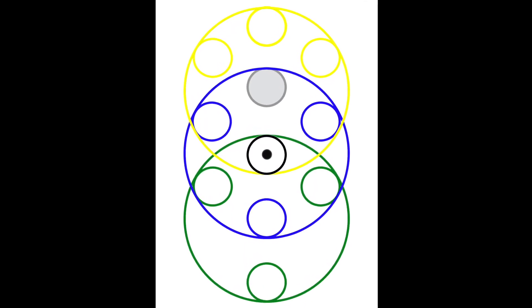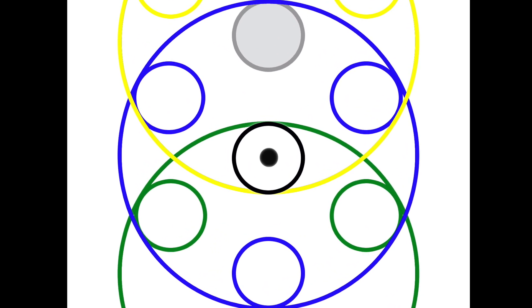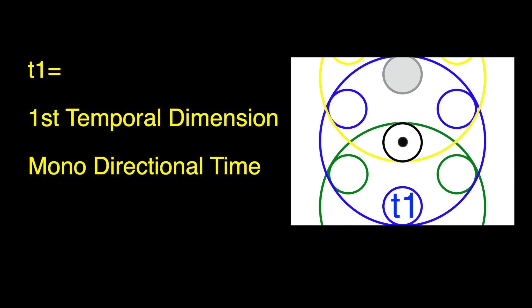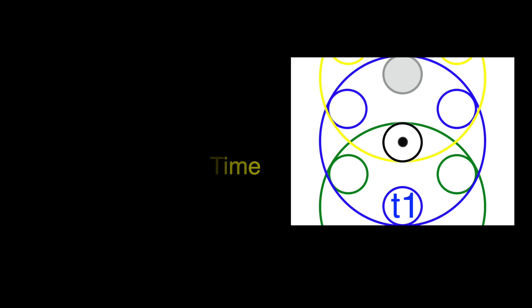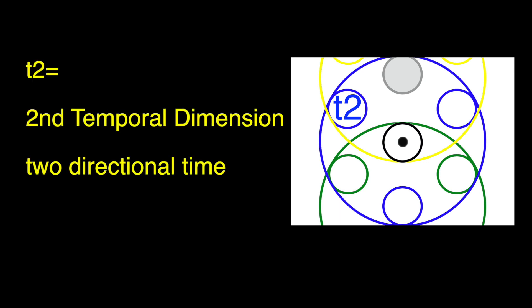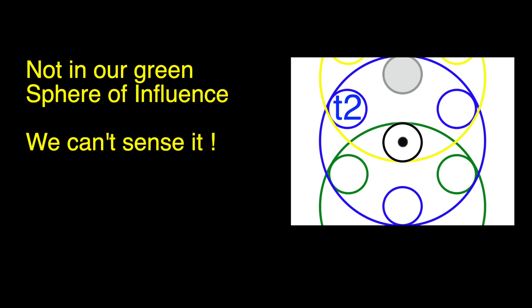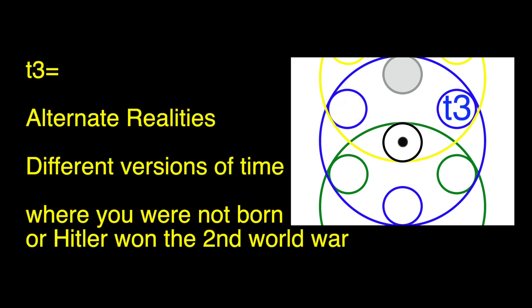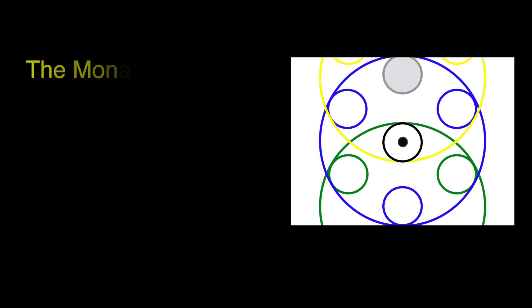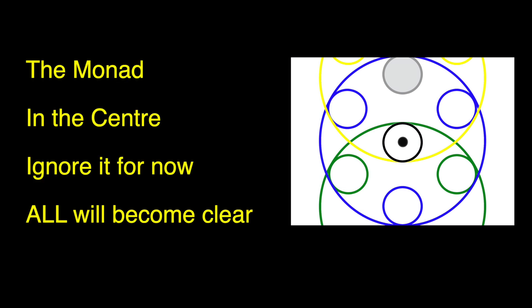Now let's take a look at the large blue circle — this represents the temporal dimensions. Inside it you will see three smaller blue circles, one for each of the three temporal dimensions. We've already mentioned the lower blue circle which is the monodirectional time we can sense. One of the others represents two-directional time — if you could experience this dimension you could travel freely forwards and backwards in time, but we can't as humans because it's not within our sphere of influence. The third small circle represents alternate realities — different versions of reality, one where you were not born or one where you were born with ginger hair. We humans can't experience alternate realities as this little blue circle is not within our green sphere of influence. Also in the large blue temporal sphere is the aforementioned monad — ignore that for now as its purpose will become clear.